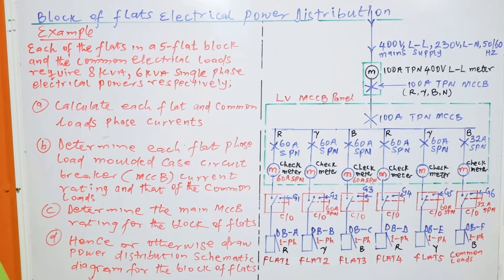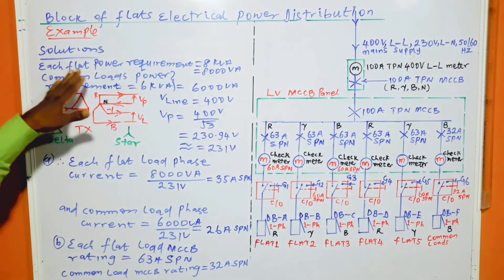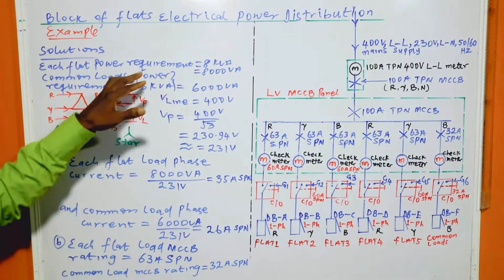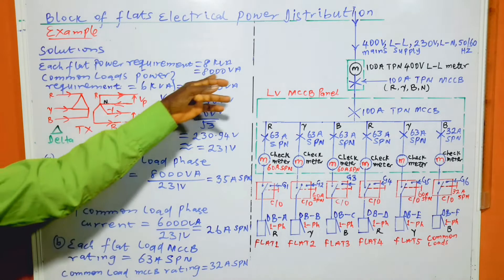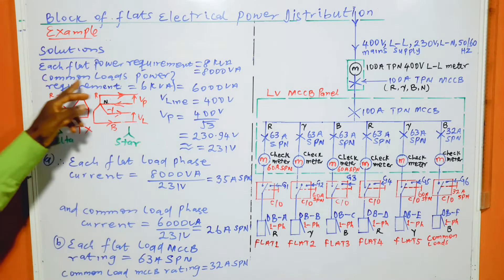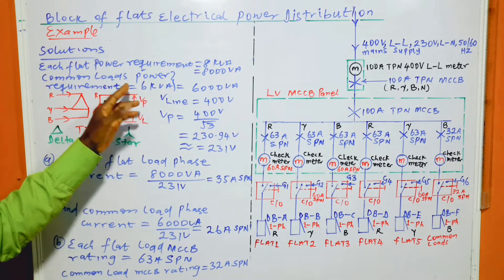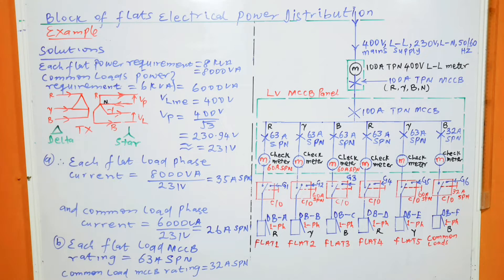Solutions to the problems: each flat's power requirement is equal to 8 kVA, which equals 8,000 VA, because the flats are identical. The common loads power requirement is equal to 6 kVA, which is 6,000 VA. We have common loads in addition to the loads of the flats.